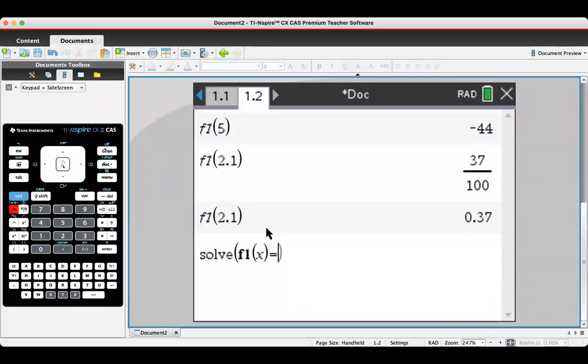And I can put the y value in. So if I was interested in knowing what the x value is at 3.8 for y, then I can go solve f1 of x equals 3.8, comma x, close the bracket—so rather than the big long expression, just f1 of x.